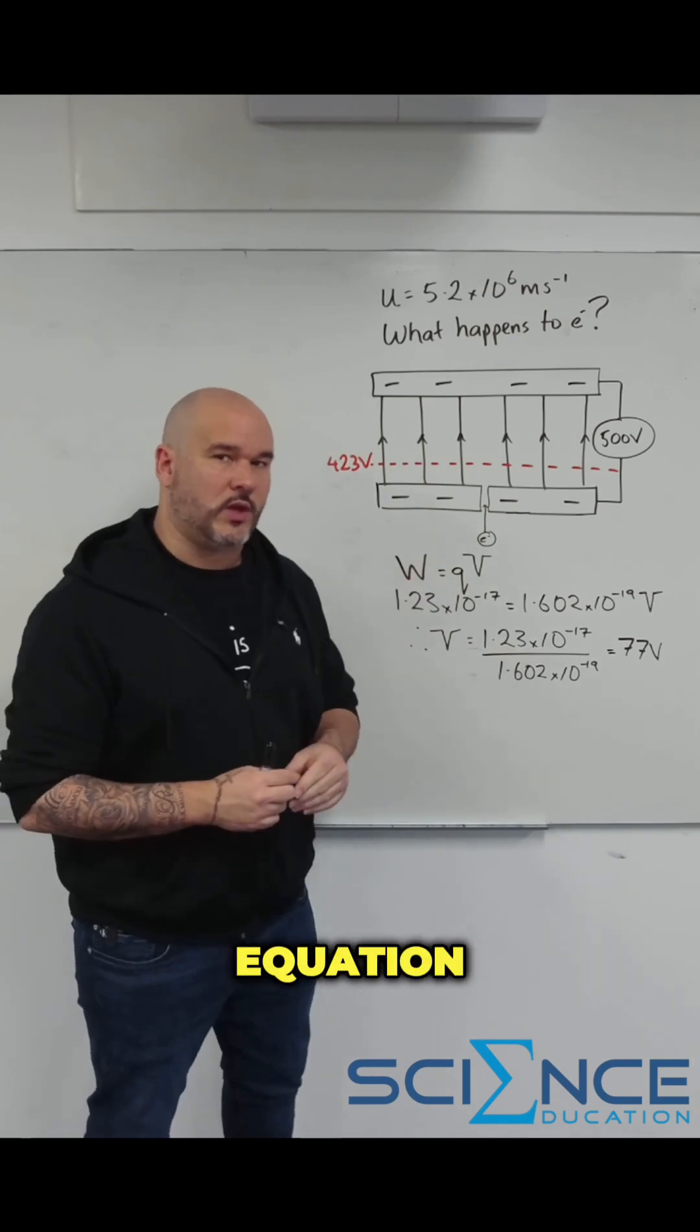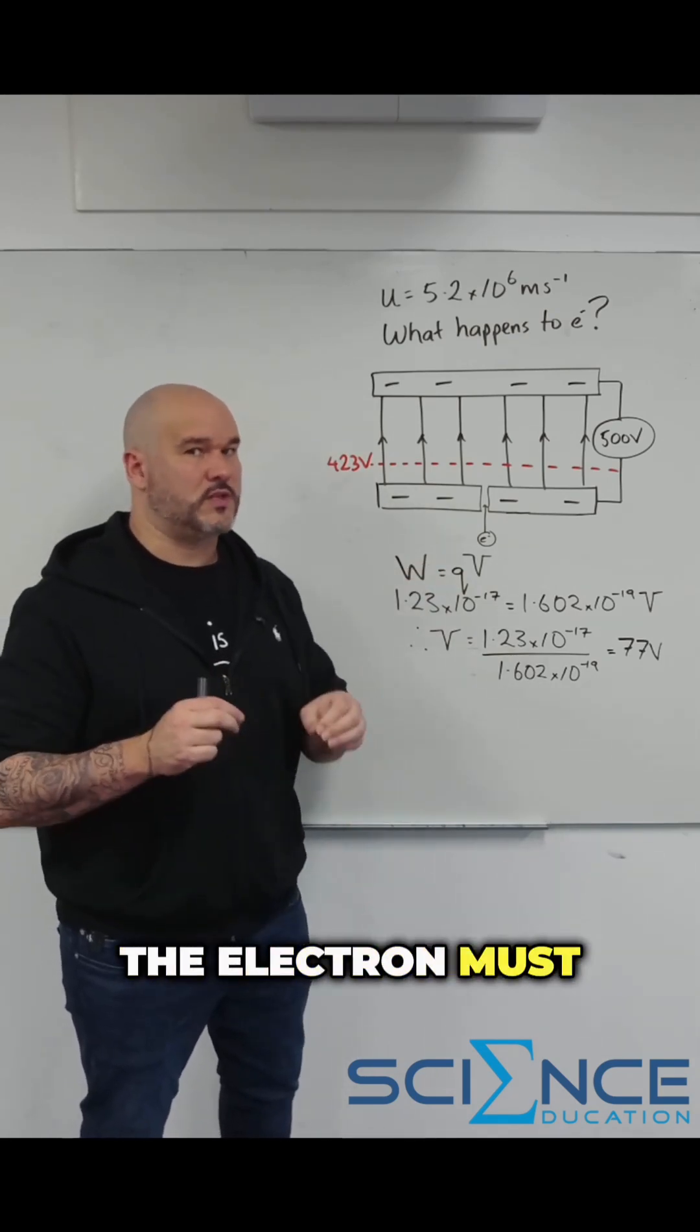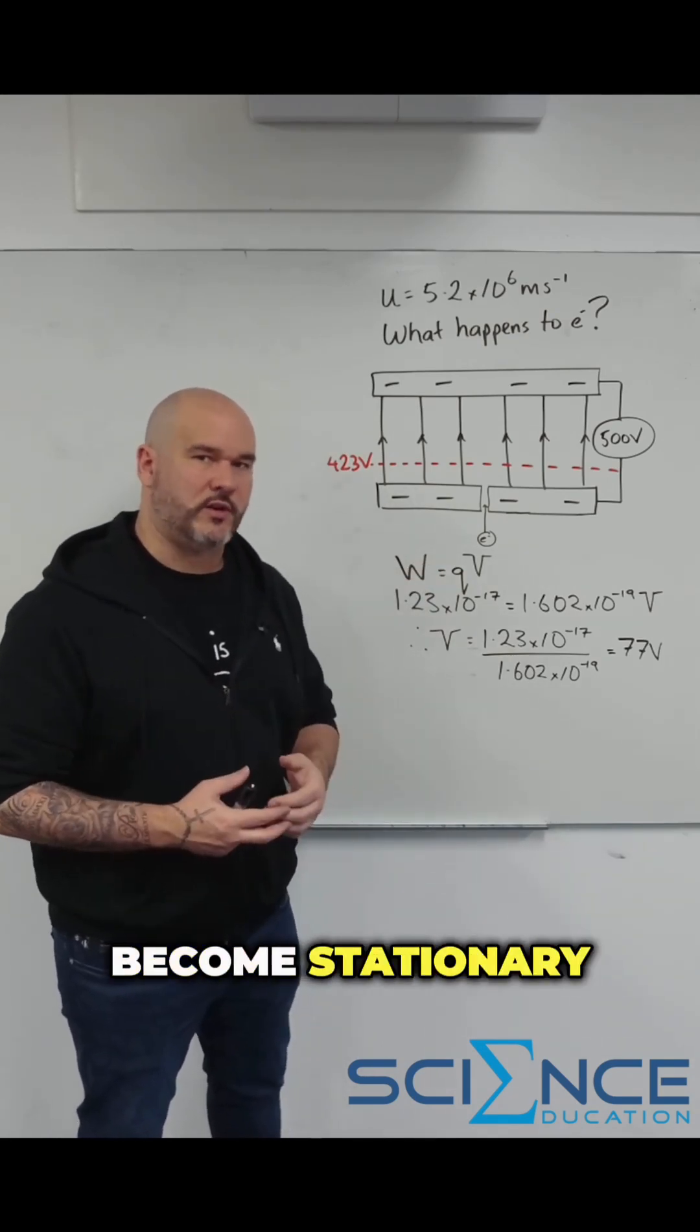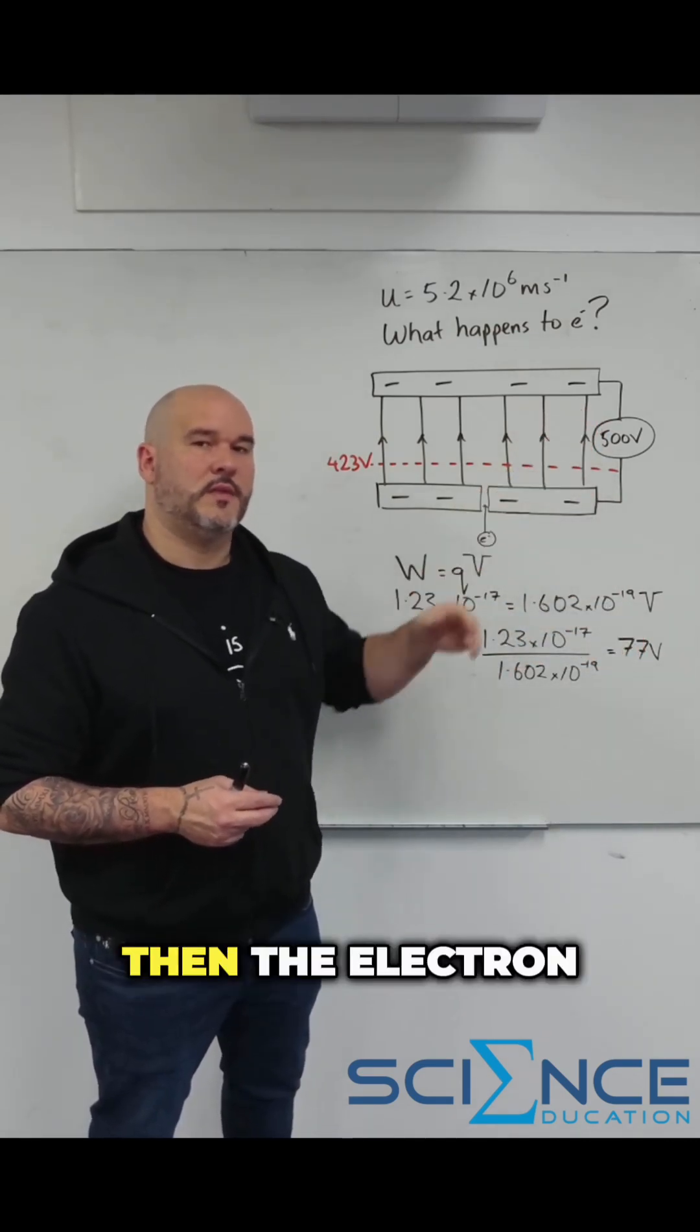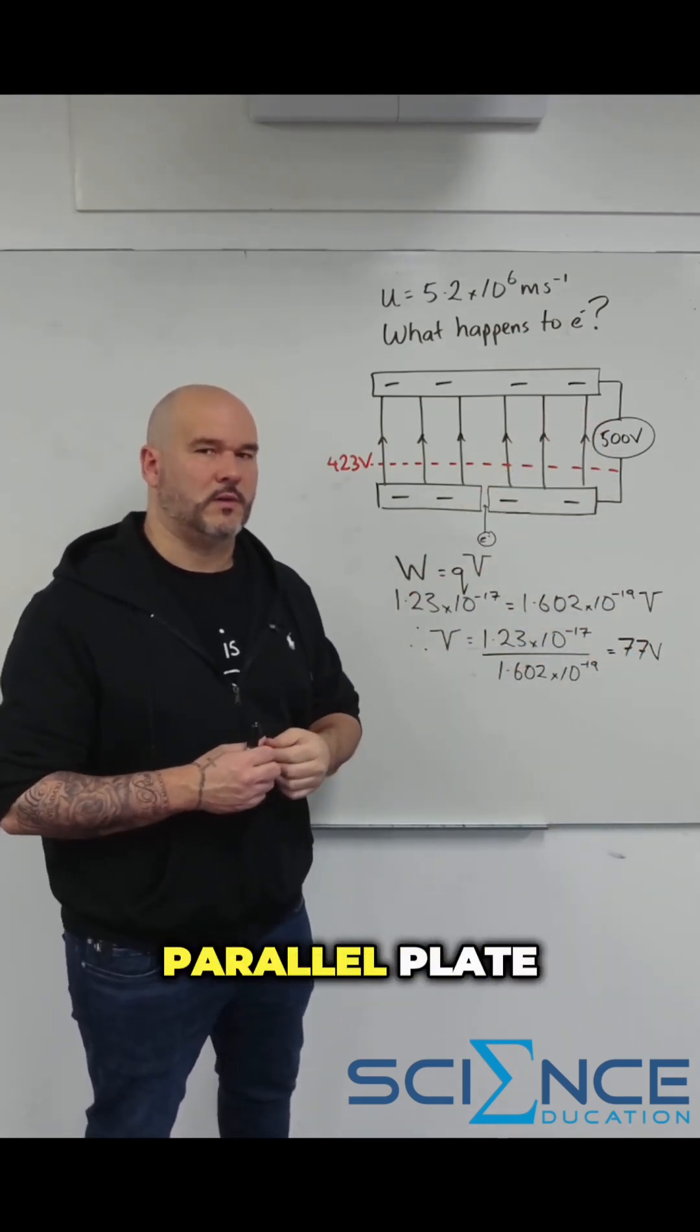So essentially, you can use this equation to figure out the potential difference the electron must move through in order to become stationary, and if that number is less than the voltage between the parallel plates, then the electron will not make it to the parallel plate.